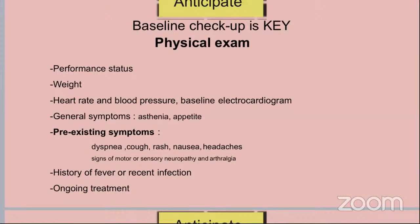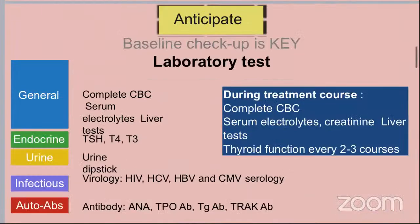We should also ask about any recent infection and its treatment. To anticipate immune-related adverse events through lab tests, every visit we should perform general investigations: CBC, electrolytes, liver and renal function. We should also perform endocrine assessment including thyroid function test with TSH, T4 and T3, virology, and anti-nuclear antibodies.